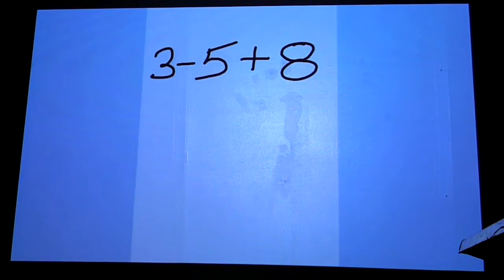You have to do the first two numbers first. The first operation is 3 minus 5. 5 is less than 3, which means your answer for that first part is going to be negative. 5 minus 3 is 2, so that's where we're going to come up with negative 2.